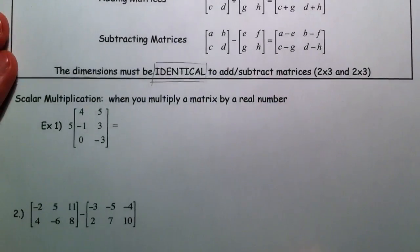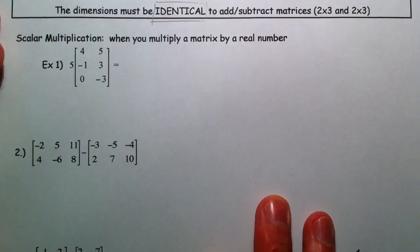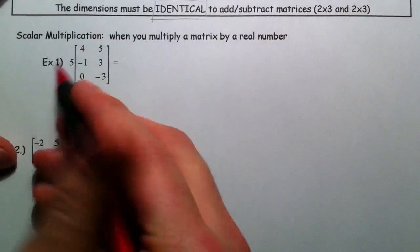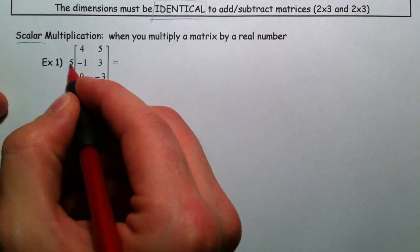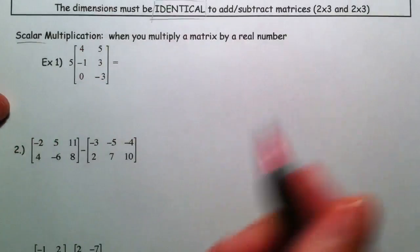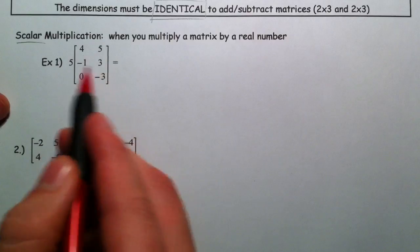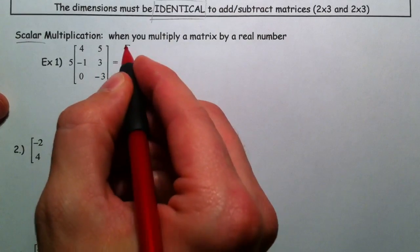If you want to scale something up or scale something down, in this case we have a scalar, spelled like that, 5 being multiplied out front. All you have to do is multiply every single number on the inside by 5.